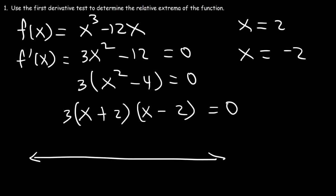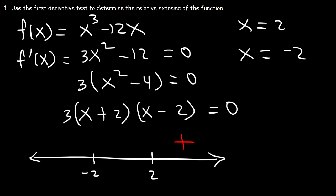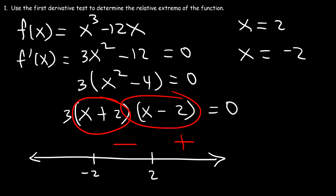Now let's create a sign chart, putting the critical numbers in ascending order. For a number greater than 2, let's try 3: (3 + 2) is positive and (3 - 2) is positive, so two positives give a positive result. For a number between -2 and 2, let's try 0: (0 + 2) is positive and (0 - 2) is negative — a positive times a negative gives a negative. For a number less than -2, like -3: (-3 + 2) is -1, negative; (-3 - 2) is also negative; two negatives give a positive.